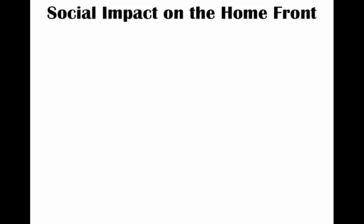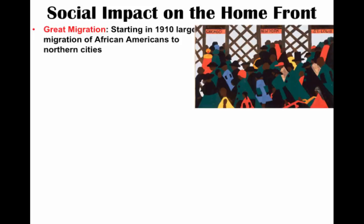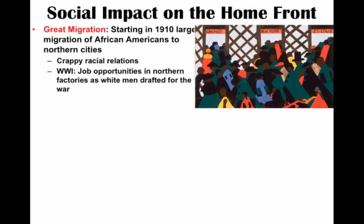World War I is going to have a huge impact on the home front, and many different groups will be impacted. African Americans were already, even before the war — roughly around 1910 — involved in a large migration to northern cities like Chicago. This is called the Great Migration. There are a lot of reasons why African Americans are moving north: crappy racial relations, Jim Crow laws in the South make you want to get out. But what changes during World War I is the opening of new economic opportunities — jobs in northern factories as white men were drafted and sent off to war.